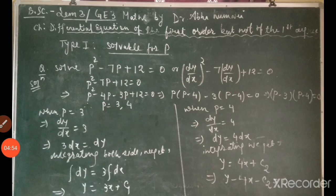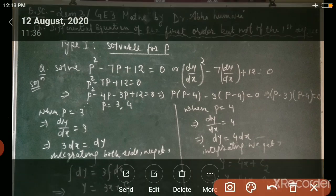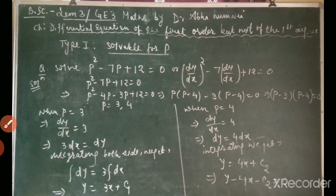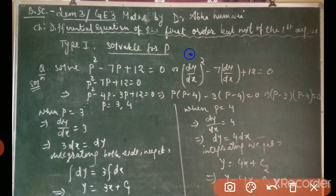Case 1: Solvable for p. To solve such a question, we first factorize the left-hand side. For example, the equation d²y/dx² - 7(dy/dx) + 12 = 0. We write this in terms of p as: p² - 7p + 12 = 0.